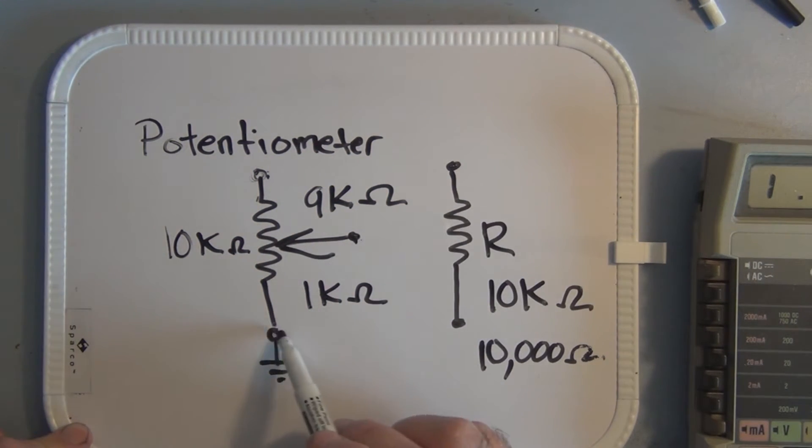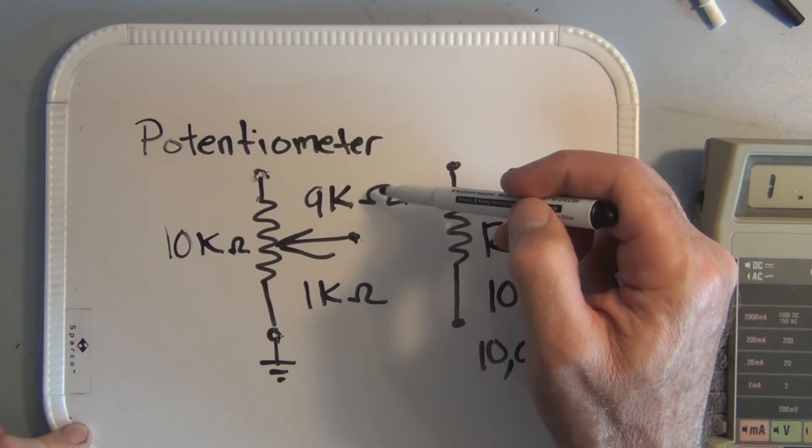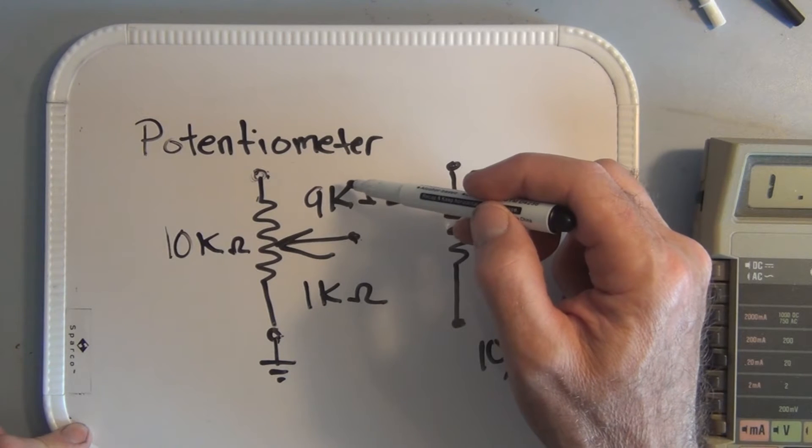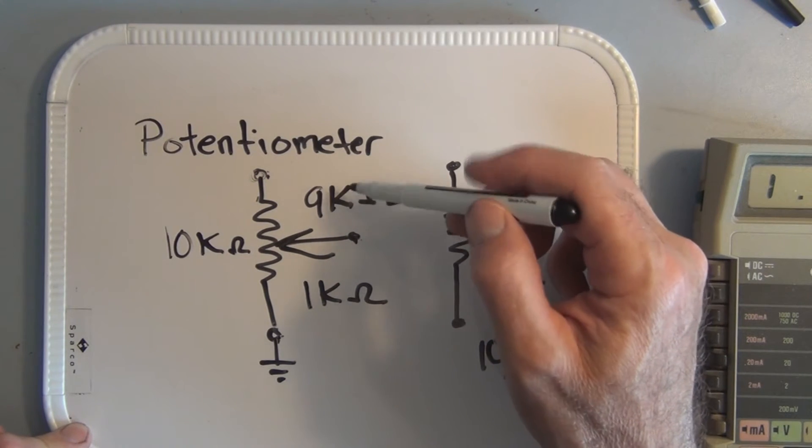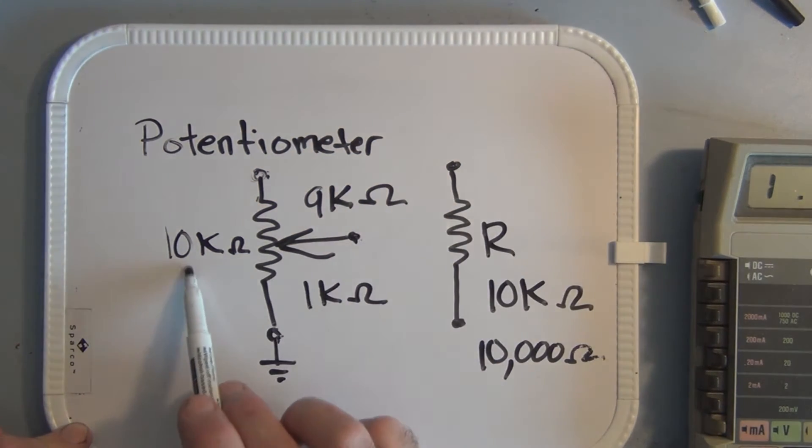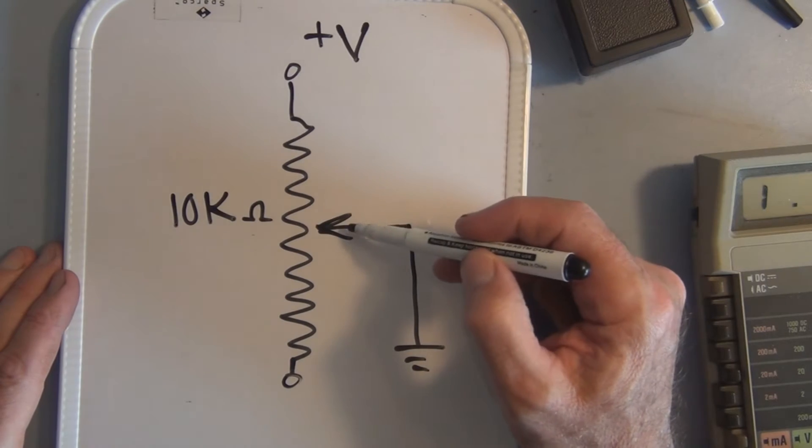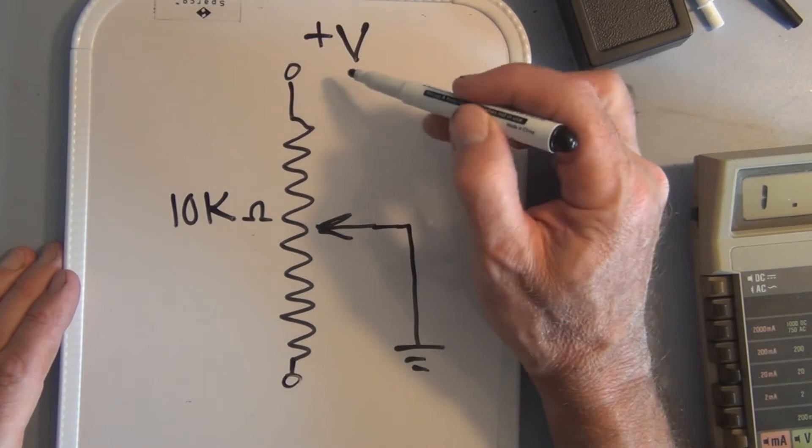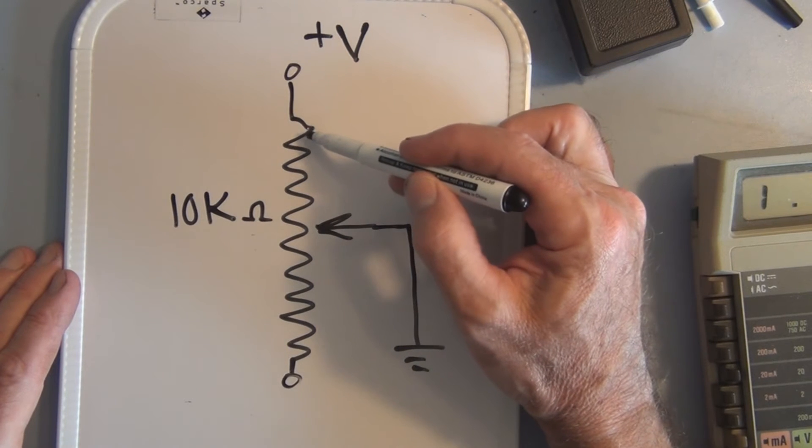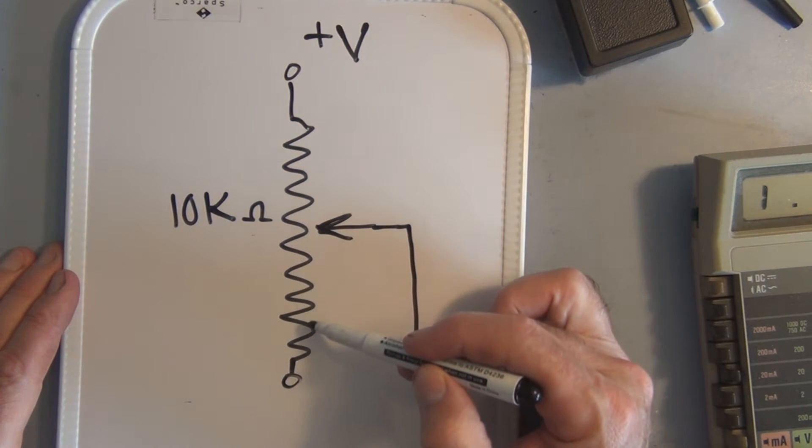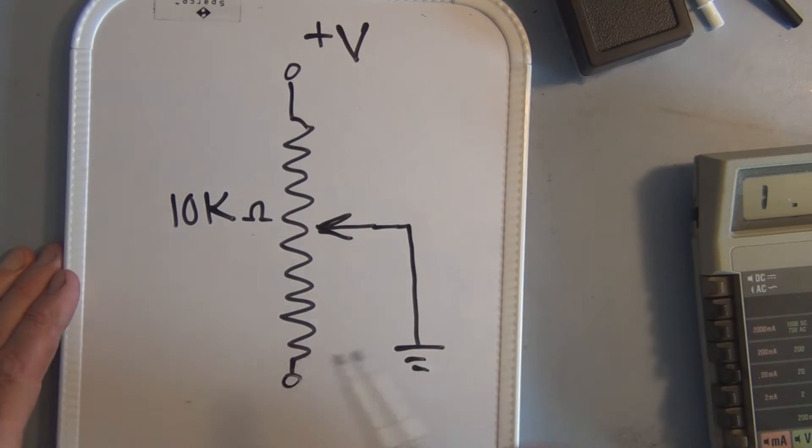So whatever your point of reference is, whatever you measure, if it's not the total 10k, if you change your point of reference you'll have the other amount of resistance available to you that when added together will total this 10k. So when you're using the potentiometer as a variable resistor you only use two contacts and as this contact moves farther away from your point of reference, say this side here, you're utilizing more and more of that resistive material up to a maximum of 10,000 ohms.